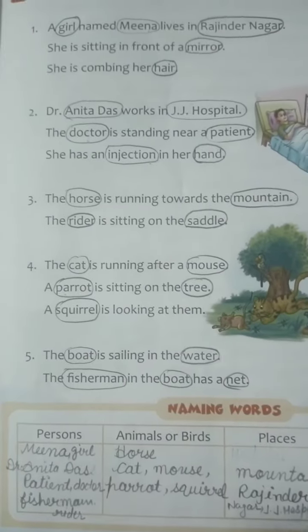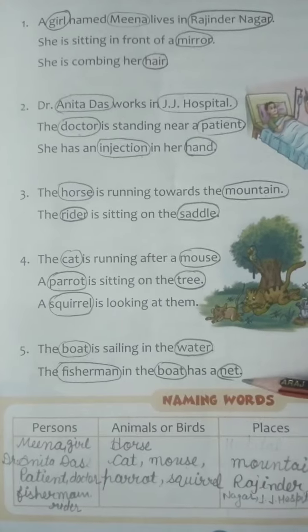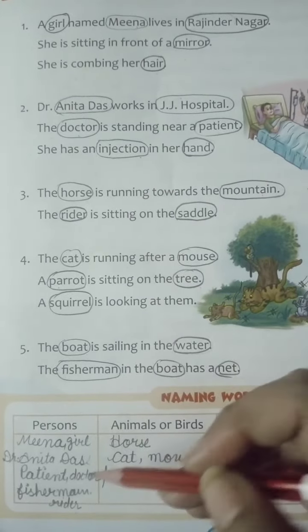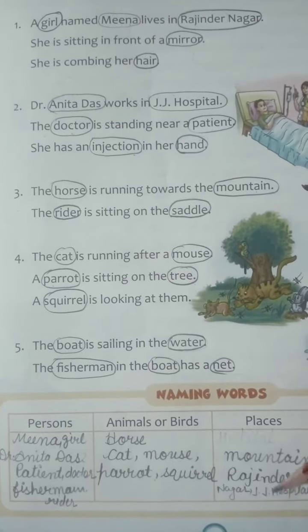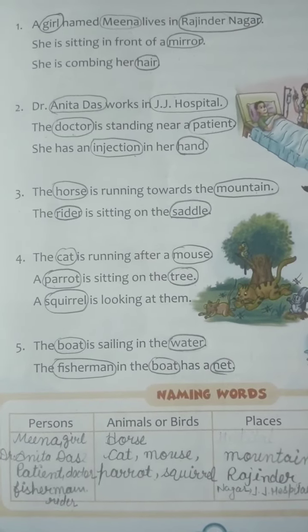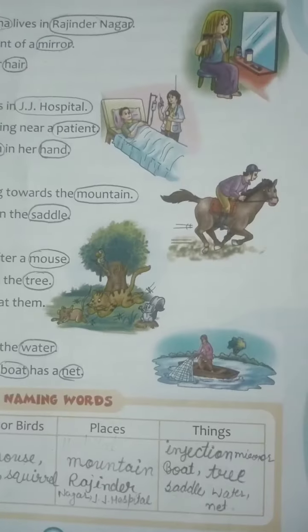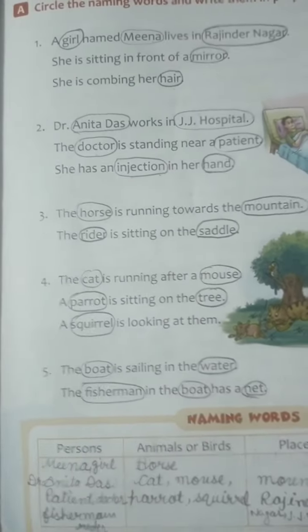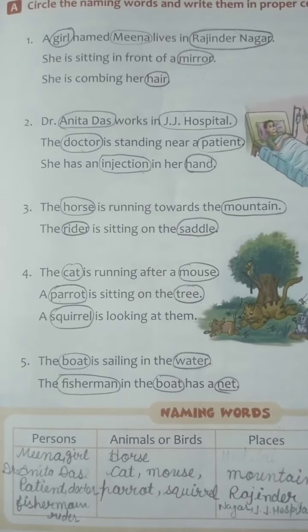After that, what do you need to do? You have five sentences. Like Meena and girl go in the persons column. Rajendra Nagar goes in the places column. The names of animals and birds go in the animals and birds column. Ok students, you will do this in your English book. Thank you.